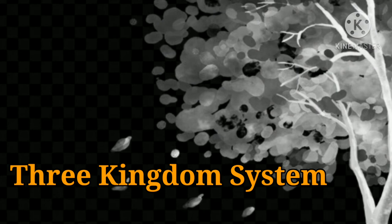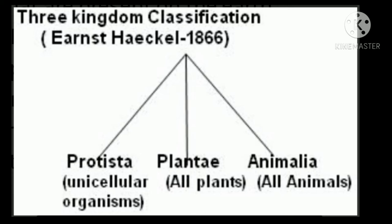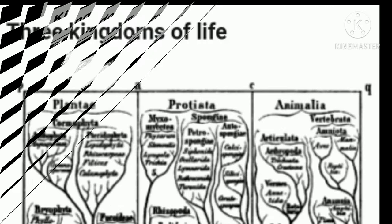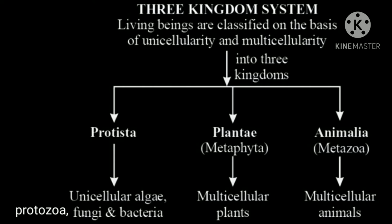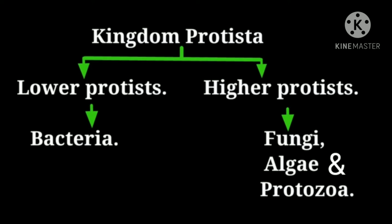Three Kingdom System: In 1866, E. H. Haeckel, a German zoologist, suggested that a third kingdom, Protista, be formed to include those unicellular microorganisms that are typically neither plants nor animals. These organisms — the Protista — include bacteria, algae, fungi, and protozoa. Bacteria are referred to as lower Protista. The others — algae, fungi, and protozoa — are called higher Protista.